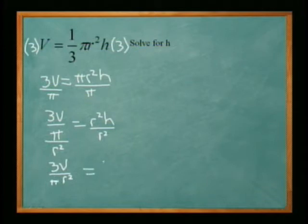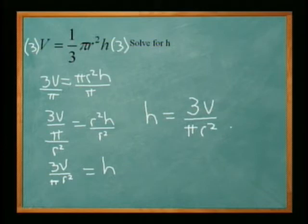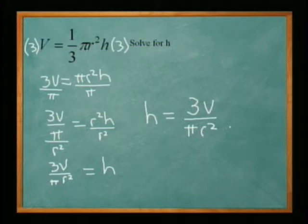That gives us h equals 3v over pi r squared. This is not any different really from a regular equation. You just have other variables which represent numbers anyway, so you still just multiply, add, divide, and subtract — just like a regular equation.